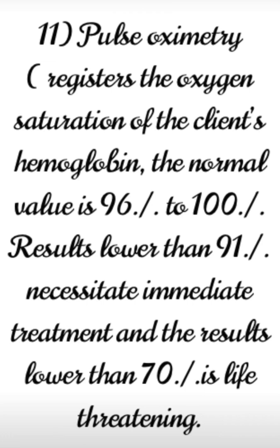Next is pulse oximetry. This checks how much oxygen saturation is in the client's hemoglobin. We use a sensor on the client's finger, toe, nose, ear, or forehead to measure oxygen saturation. Normal is 96 to 100 percent. Lower than 91 percent requires immediate treatment, and results lower than 70 percent are life-threatening, requiring immediate action.